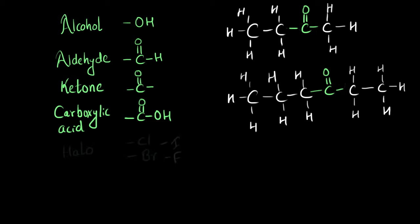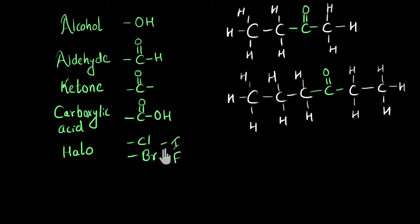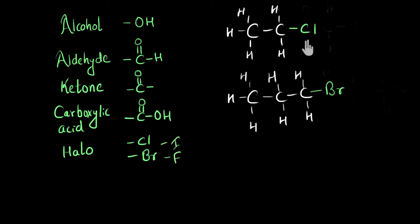Next, I want to talk about the halo group — the halogen family: basically the atoms of chlorine, bromine, iodine, or fluorine. When they get attached to hydrocarbons, they also impart special functions. Here you can see a chloro group attached to the alkane family, and this is a bromo group attached to the alkane family.